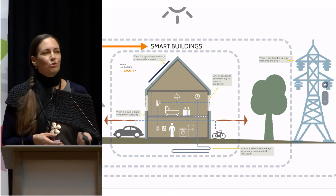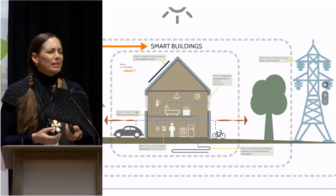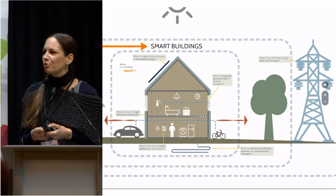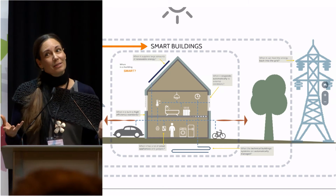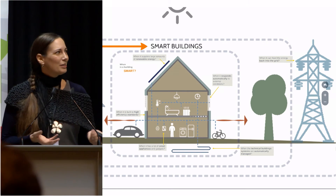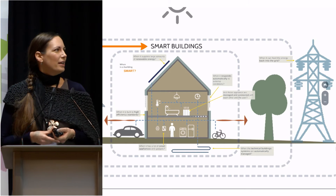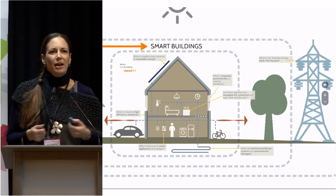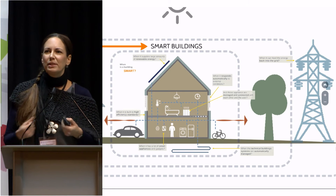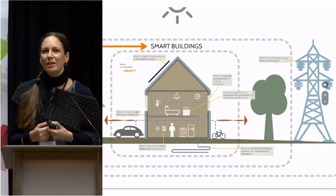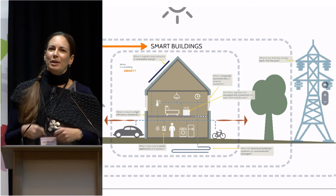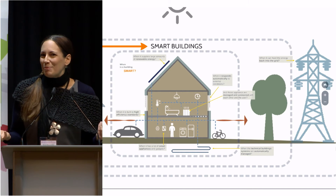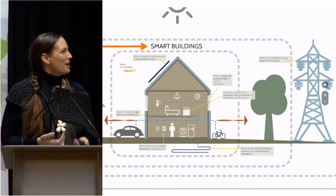Or is it smart when it has a lot of smart appliances and gadgets? We can count the gadgets — a fridge that orders milk for us, maybe. Does that make the building smart? And when these appliances are connected with each other and the user — I have an app on my phone, I can control my building, the building knows when I come home because it knows my pattern. The building already knows when I usually go to sleep, when I get up, and what temperature I would like. Does that make it a smart building? Up for discussion, I guess.